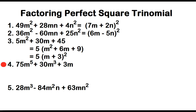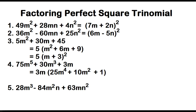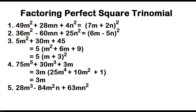Example number four: 75m to the power of 5 plus 30m cubed plus 3m. Again, this is not a perfect square trinomial, but if you factor out the greatest common monomial factor, the other factor is a perfect square trinomial. The greatest common monomial factor is 3m, and the other factor is 25m to the power of 4 plus 10m squared plus 1, which is a perfect square trinomial. The square root of 25m to the power of 4 is 5m squared, and the square root of 1 is 1. The factors are 3m and the square of the quantity 5m squared plus 1.